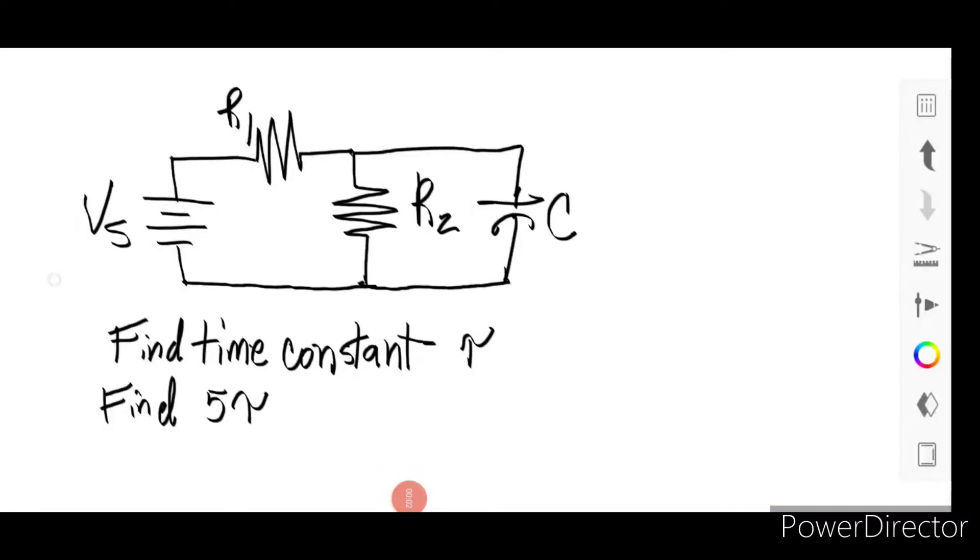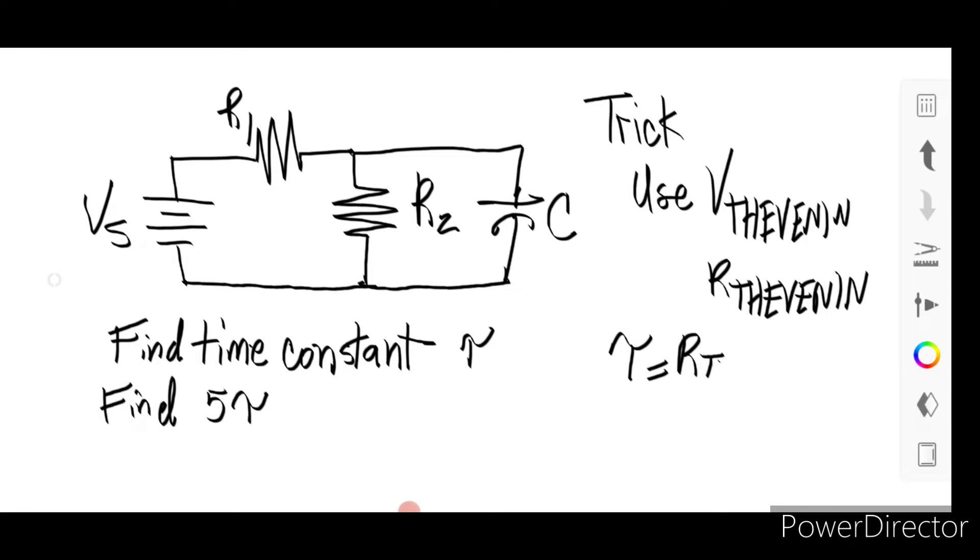Hello, it's Morgan Labs and today we're trying to figure out a time constant for a non-trivial RC circuit. A lot of times you see a circuit and it's not just a basic R and C, you'll have an extra R in there. So spoiler alert, the trick, if you want to call it that, use V-thevenin, R-thevenin, equivalent circuits, that's the key. And your tau is just your R-thevenin times the C. And then you find your 5 tau, your 99 point whatever percent to charge your capacitor.